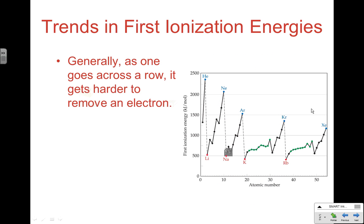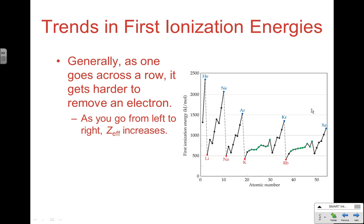As you move across a row, it gets harder to remove an electron. Same thing we've talked about every single time: as you go from left to right, effective nuclear strength is increasing. We've got a stronger nucleus, and we're not adding more core electrons, so we're not increasing our shielding effect all that much. So the nucleus gets stronger and stronger, atom sizes get smaller, ion sizes get smaller, and you have to fight the nucleus to remove that electron. The general trend going across is that ionization energy increases because of an increase in effective nuclear strength.